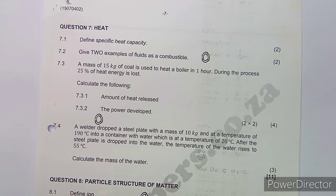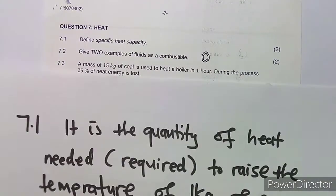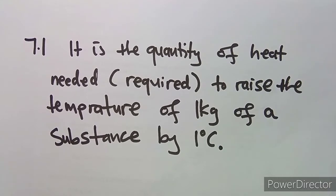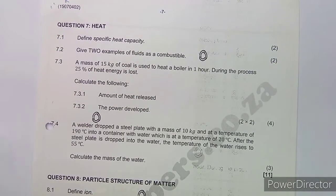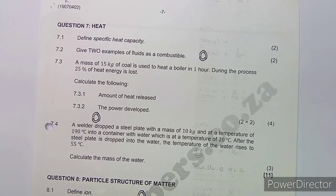Let's quickly go through the question and see what we're given. The first part, 7.1, asks us to define specific heat capacity. I have given you this definition before, but here it is again: specific heat capacity is the quantity of heat needed — that is required — to raise the temperature of one kilogram of a substance by one degree Celsius. This is the actual definition they need from you.